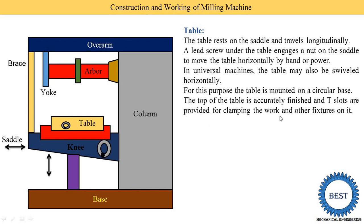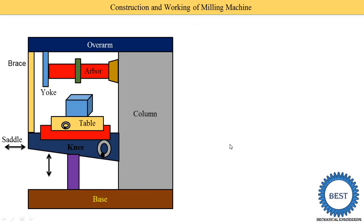The top of the table is accurately finished and T-slots are provided for clamping the work and fixtures. On the table, when viewed from the side, you can observe various T-type holes — these are the T-slots. On these T-slots we put different nuts and bolts for clamping the workpiece and different fixtures. The workpiece is held using clamps, an indexing mechanism on one side, and a tailstock on the other side.